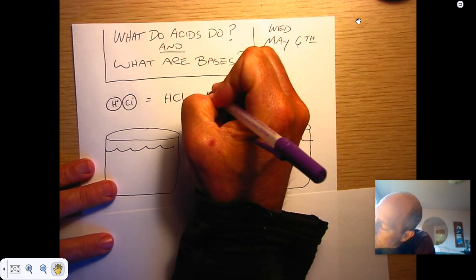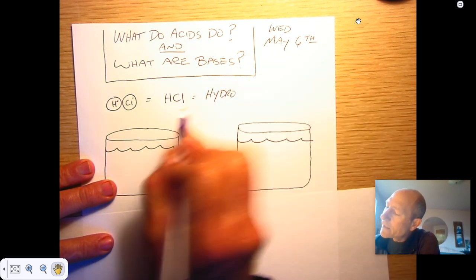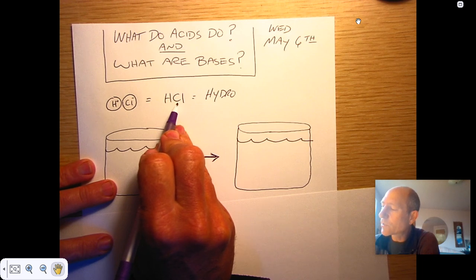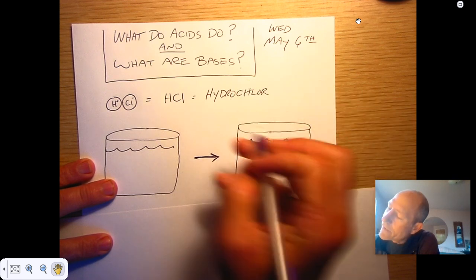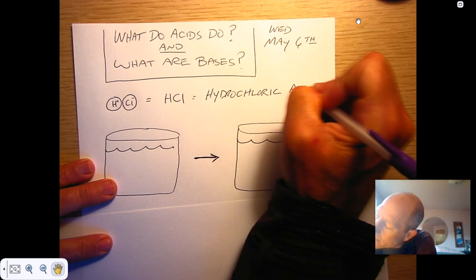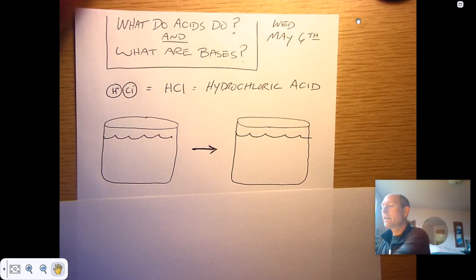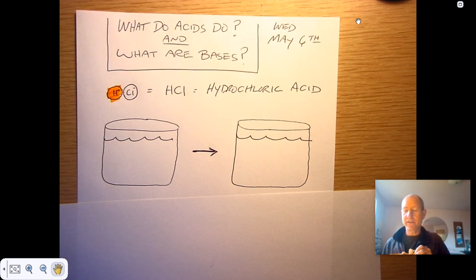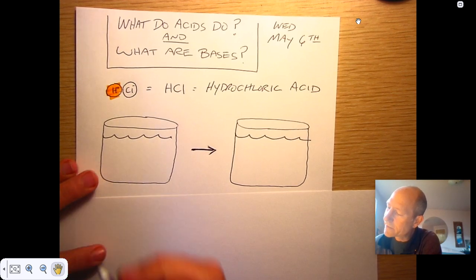So, halide acids always start with hydro. And then, the root of the anion, chlorine, would be chlor. And then, I'd add ick, hydrochloric, and then I'd add acid. So, this is hydrochloric acid. And just to keep track of it, I'm going to highlight the proton there, which is to say the hydrogen ion, because they're the same thing.